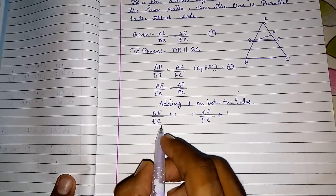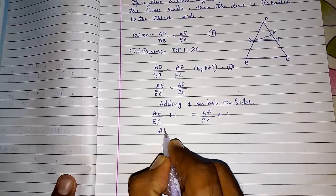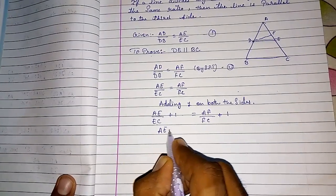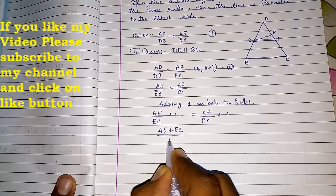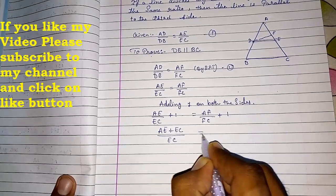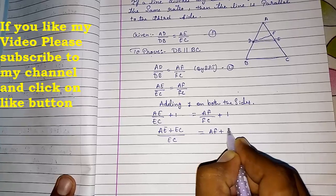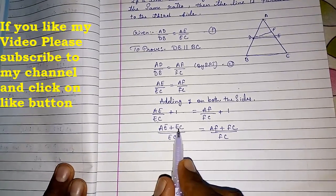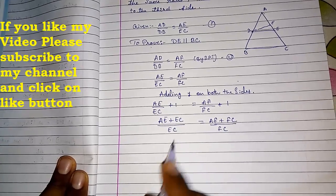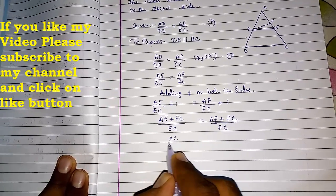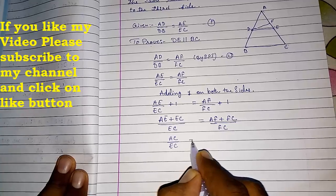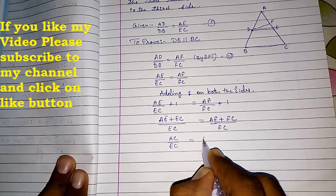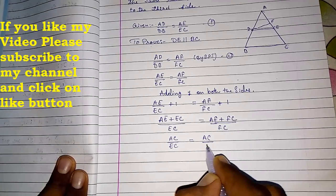Now, LCM. So we will get AE here, EC will be multiplied. AE plus EC upon EC equals AF plus FC upon FC. So what will happen? AE plus EC gives you AC by EC and again AC by FC.